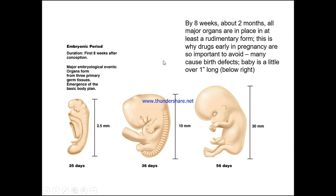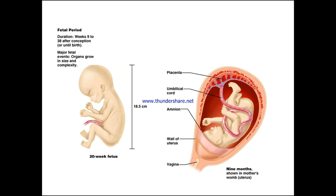Late fifth month at around 19 centimetres, the embryo is a lot further developed. During the embryonic period — the first eight weeks after conception — major embryological events include organs forming from the three primary germ tissues and the emergence of the basic body plan. By eight weeks, all major organs are in place in at least a rudimentary form. This is why avoiding drugs early in pregnancy is so important, as many cause birth defects. Drug taking, smoking, and excessive alcohol can stunt growth and cause retardation of certain aspects of the growth cycle.